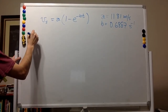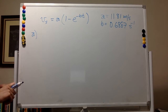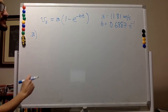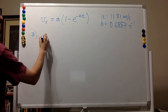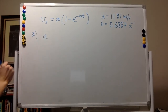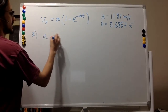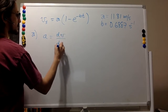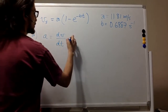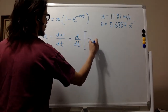Part a asks for Lewis's acceleration at time t. For acceleration, I'm going to use a different symbol to avoid confusion with the parameter a. The acceleration is the derivative of the velocity with respect to time, and we are given the velocity. So this is just the derivative with respect to time of the whole expression.